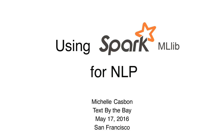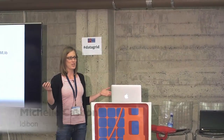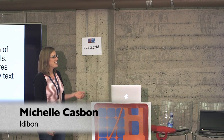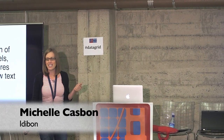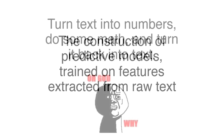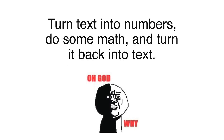That's kind of what we'll be talking about today. One of the things that we built at IttyBond is called IttyML. I purposely chose a generic title using Spark for MLlib. So what exactly are we here to talk about? We are here to talk about the construction of predictive models trained on features extracted from raw text. Essentially what we're going to be doing is turning text into numbers, doing some math on those numbers, and then turning it back into text.